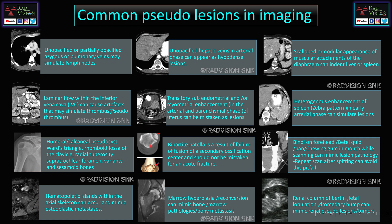Bone variants and anatomical variants like femoral and calcaneal pseudocysts, Ward's triangles, rhomboid fossa, and radial tuberosity can mimic bone lesions. Bipartite patella can mimic an acute bone fracture. Even bindi on the forehead and beetle nut — especially in those who chew tobacco, beetle quid, pan, or chewing gum — can mimic oral pathologies; always repeat the scan after spitting. Hematopoietic red lines within the axial skeleton can mimic osteoblastic metastasis.